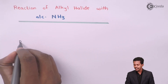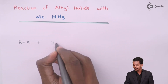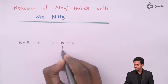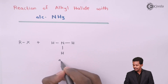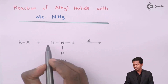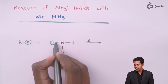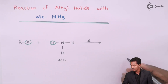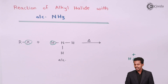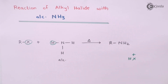The alkyl halide represented as RX is treated with alcoholic ammonia. In this reaction, one hydrogen atom of ammonia is replaced by the alkyl group of the alkyl halide. The X along with the H atom of ammonia is removed in the form of HX, and what we obtain is R-NH2, which is the primary alkyl amine.